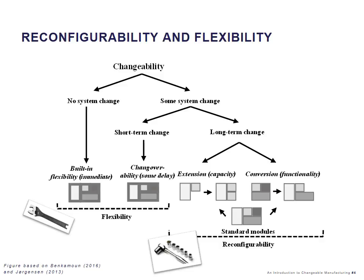We can make long-term changes to the system — we can extend the capacity or convert the functionality — and we usually do this through standard modules, which helps us accomplish efficient reconfigurability. This is also why we illustrate reconfigurability by a modular wrench, which is fairly efficient for different types of situations. However, if we want to change the situations where we use the tool, we need to make some kind of hardware change — we basically need to change the modules, which is the same with a reconfigurable system.